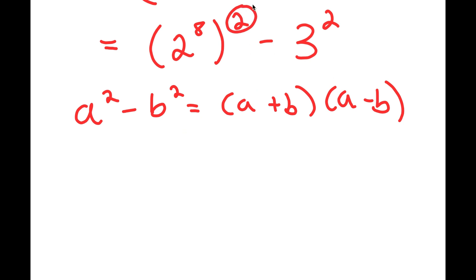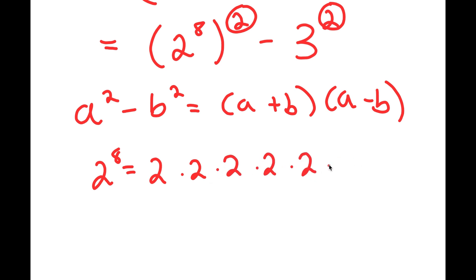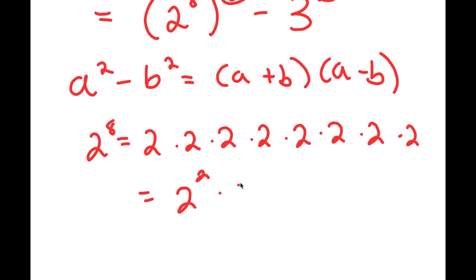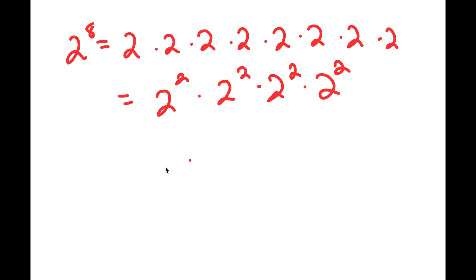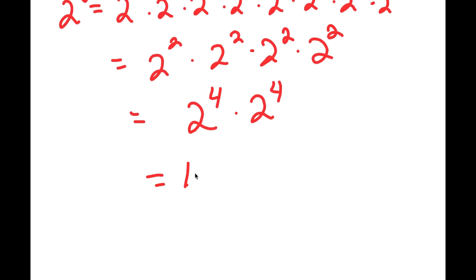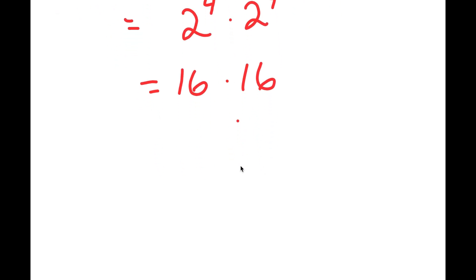Notice how we have a number squared minus another number squared. The only thing that would make this simpler is if we solve for 2 to the power of 8. So 2 to the power of 8 is equal to 2 times 2 times 2 times 2 times 2 times 2 times 2 times 2 — that's 2 multiplied by itself 8 times. This can also be written as 2 squared times 2 squared times 2 squared times 2 squared, and further as 2 to the power of 4 times 2 to the power of 4. Now, 2 to the power of 4 is equal to 16, so I get 16 times 16, which equals 256.